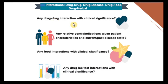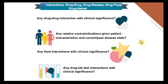It is important to identify drug-drug interactions with clinical significance, which require any adjustment of the drug itself including dose or duration of therapy. Is there any relative contraindication given patient characteristics and current or past disease state? This is about drug-disease interaction — any diseases that might interfere with the current therapy or any contraindication to certain medication based on the patient's characteristics. Is there any drug-food interaction that has clinical significance, or any drug-lab test interactions with clinical significance?